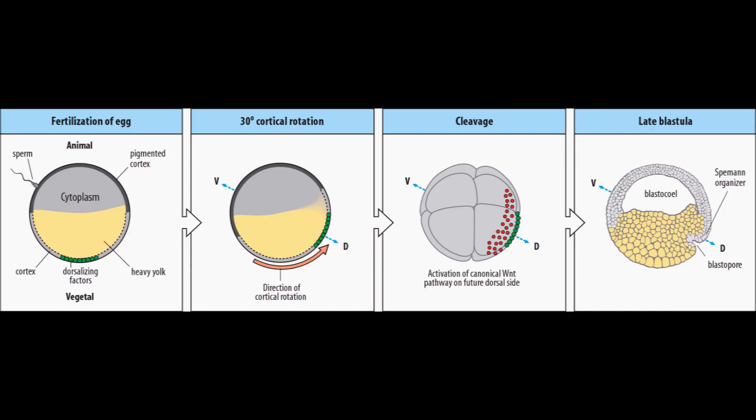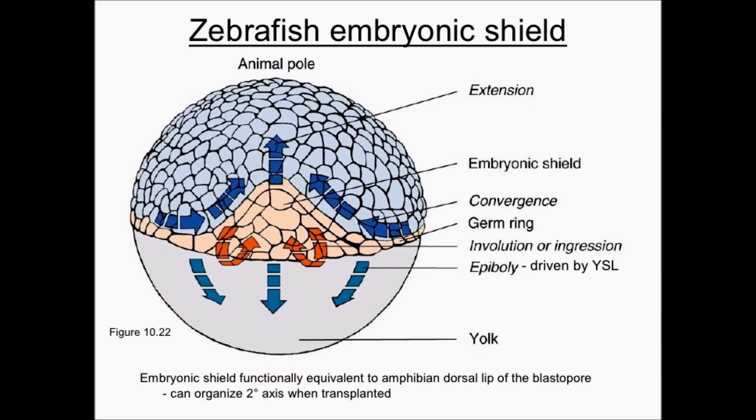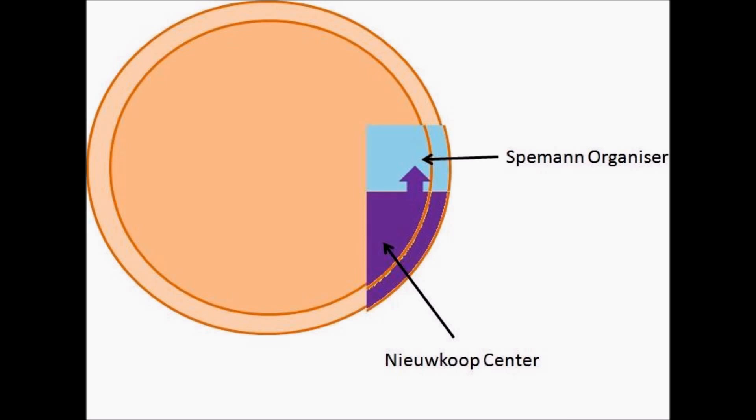Throughout this video, we have talked about multiple elements needed for dorsalization, including cortical rotation, Wnt signaling, mesoderm induction, the Nieuwkoop center, and the organizer. Other species also have organizers. In zebrafish, the shield acts as the organizer. One misconception a student might have is that the Nieuwkoop center and the organizer are the same. The Nieuwkoop center induces the organizer and occurs before it.